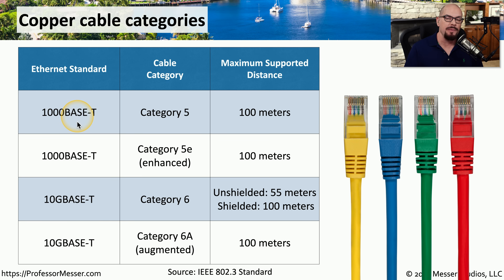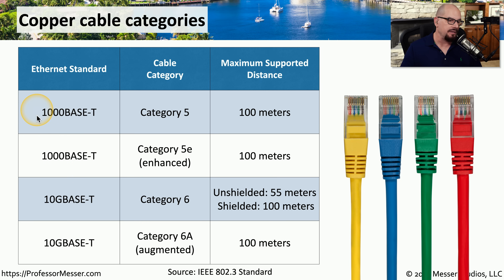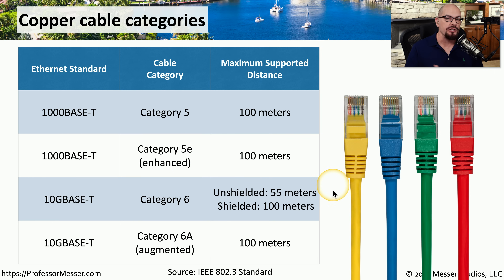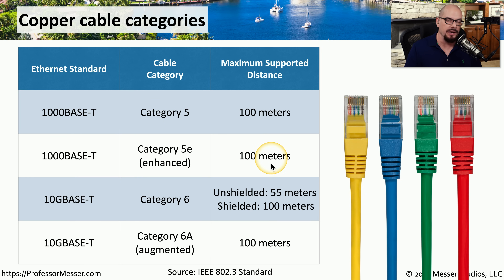1000BASE-T is a 1 gigabit per second ethernet standard operating on twisted pair copper cabling, and 10GBASE-T is a 10 gigabit per second ethernet also running over twisted pair. The IEEE standard for 1000BASE-T supports a minimum of category 5 cabling to a maximum distance of 100 meters. Category 5 cable has also been enhanced with additional validation tests, now called category 5E — the E is for enhanced. If you purchase new cabling today you'd only find category 5E, though existing infrastructure may still use category 5. 10GBASE-T supports category 6 and category 6A — the augmented version — to a maximum distance of 100 meters.